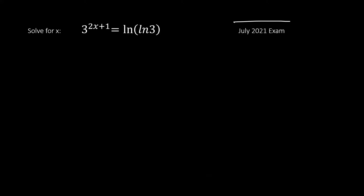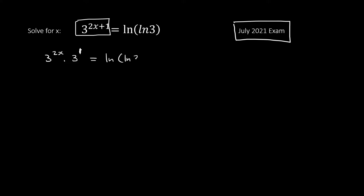Okay, this is a 2021 exam question. Solve for x: they gave 3^(2x+1) = ln(ln3). First we must expand this. We can change 3^(2x+1) to 3^(2x) times 3^1. I'm leaving ln(ln3) as is to avoid rounding errors.